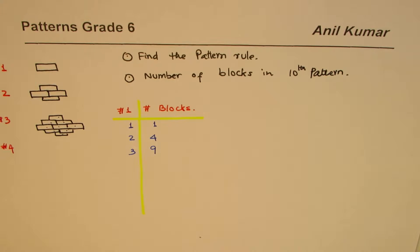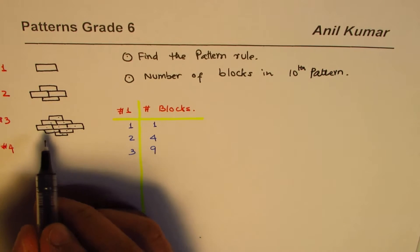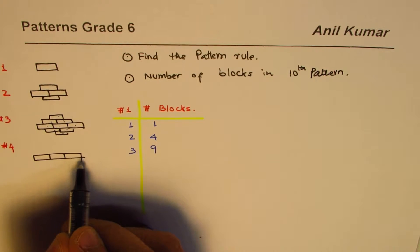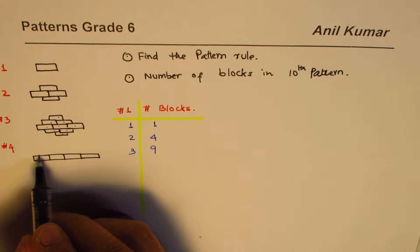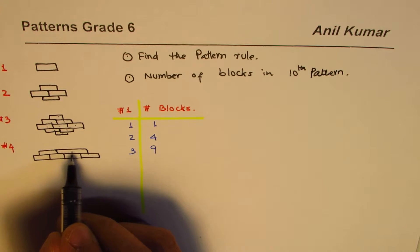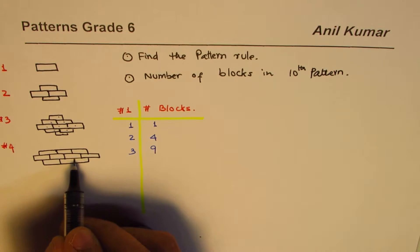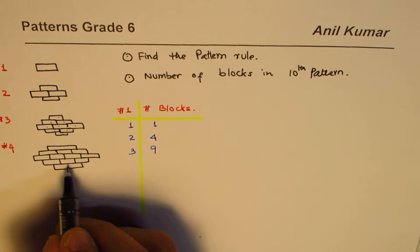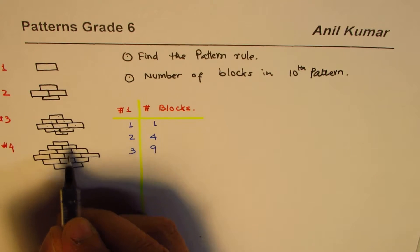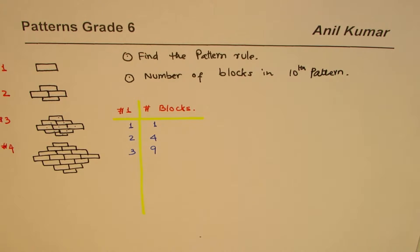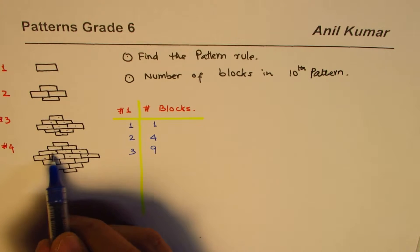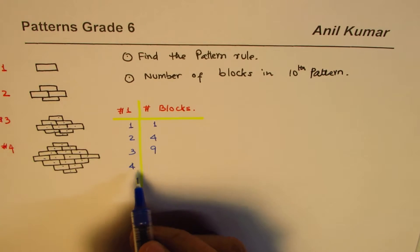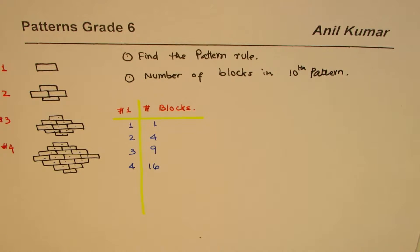Let's sketch the fourth design to see how many blocks it has. In the center we have four bricks. On top we have three, and underneath also three. Above those we have two on each side, and then one on the top and one at the bottom. Counting all the blocks: four, five, six… up to sixteen. So in the fourth design we have 16 blocks.